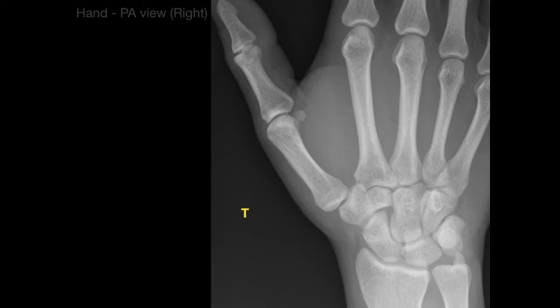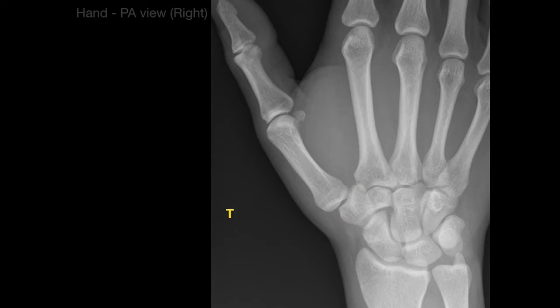T is for the trapezium, which I remember because the trapezium articulates with the thumb — thumb, trapezium. Right beside it is the trapezoid, which is also Latin for table. So trapezium and trapezoid both have a Latin derivation relating to table — evidently, it looks like a table, like you could play poker on it.